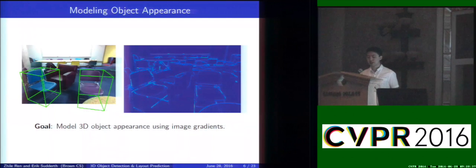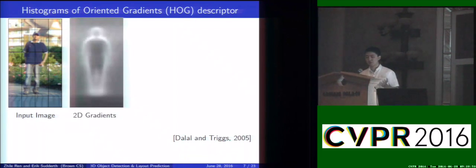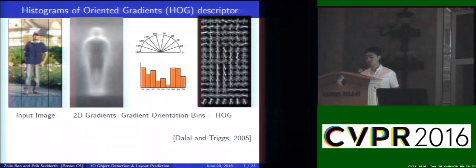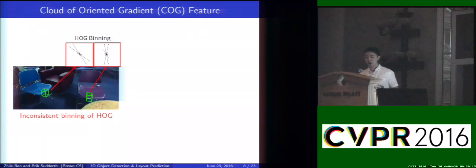Our goal is to design a model for object appearance, and to model that, we make use of image gradients. People traditionally use histogram-oriented gradients as a HOG descriptor. It starts by discretizing the image into cells, computing 2D gradients, pre-defining some gradient orientation bins, and then constructing a histogram for each cell. However, this is pretty problematic for indoor scenes or 3D recognition tasks. Suppose we have two chairs that are facing different directions — if you compute the HOG feature at the same location for the chairs, it will be pretty inconsistent.